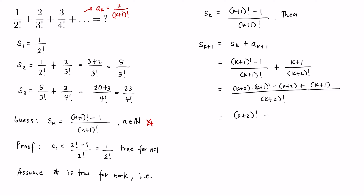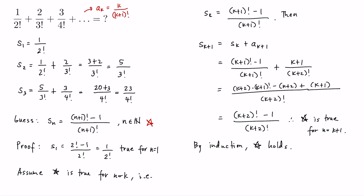Simplifying the numerator, we can write it as (k+2) factorial minus k minus 2 plus k plus 1, which is (k+2) factorial minus 1, all over (k+2) factorial. Therefore equation star is true for n equal to k plus 1, and by mathematical induction, equation star holds for all n in the set of natural numbers.